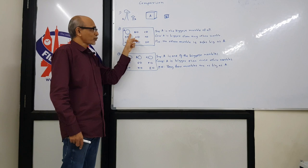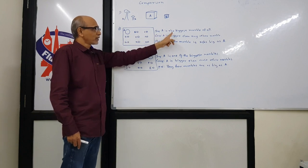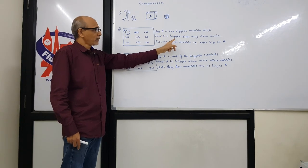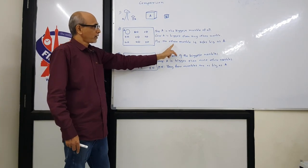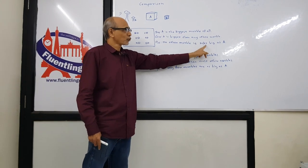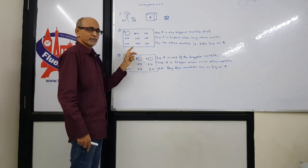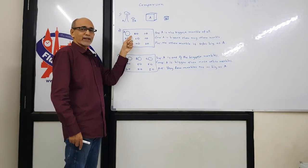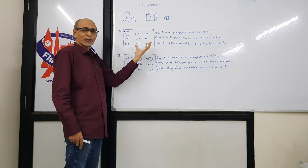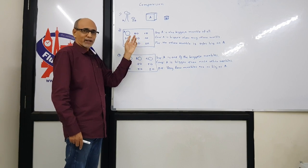In this type of situation, we use the biggest marble for superlative degree, bigger than for comparative, and as big as or so big as for positive. A is the biggest marble of all, A is bigger than any other marble, and no other marble is as big as A.